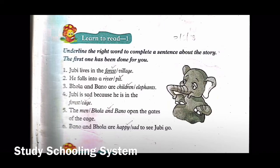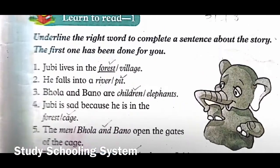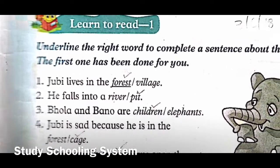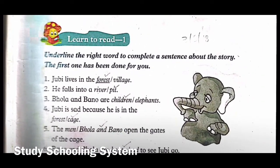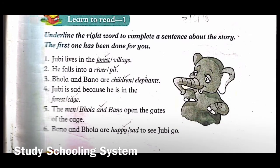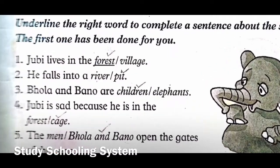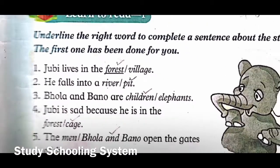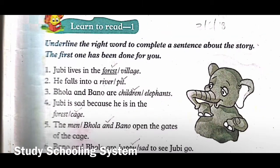The first one has been done for you. We have two options and we need to underline the correct one. Number one: Jubi lives in the forest slash village - where does Jubi live? Yes, in the forest, so we will underline 'forest.' Number two: he falls into a river slash pit - where does he fall? Yes, into a pit.